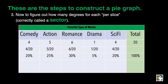Now, to figure out how many degrees for each slice — correctly called a sector — we need to remember that the full circle has 360 degrees. For comedy: 4 over 20 times 360 equals 72 degrees. Or simply, 20% of 360 degrees equals 72 degrees.